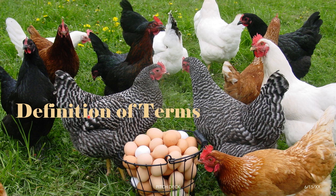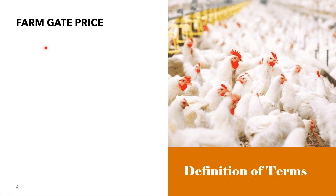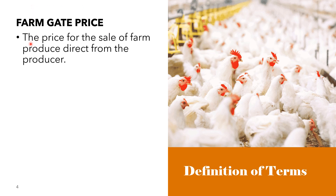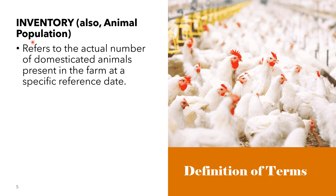For the definition of terms: farm gate price refers to the price for the sale of farm-produced goods direct from the producer. Inventory refers to the actual number of domesticated animals present in the farm at a specific reference date.